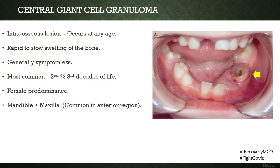The term central giant cell granuloma is reserved for lesions which occur within the bone — the word 'central' means it is an intraosseous lesion. It occurs over a wide age group, most commonly in the second and third decade of life. The lesion may present as a rapid to slow-growing swelling of the bone and is generally symptomless. It is more commonly seen in females, with the maxilla and anterior mandible being common sites of predilection.